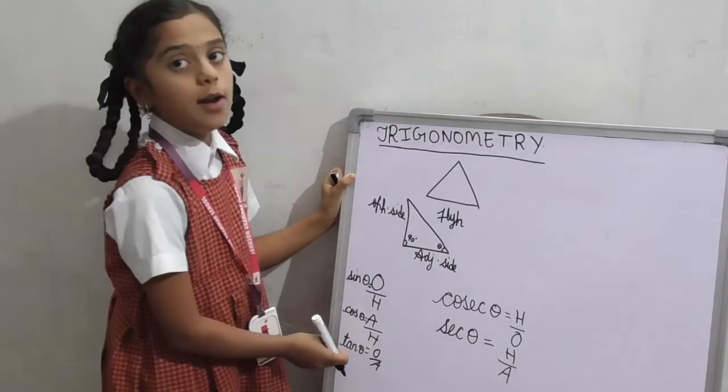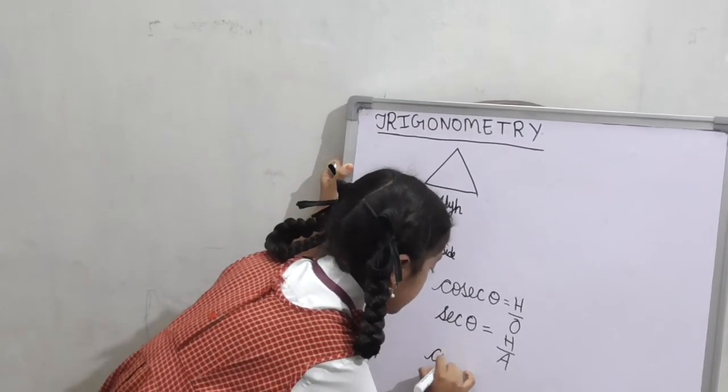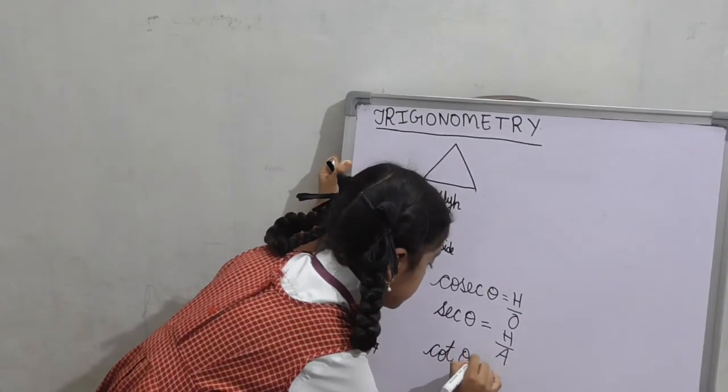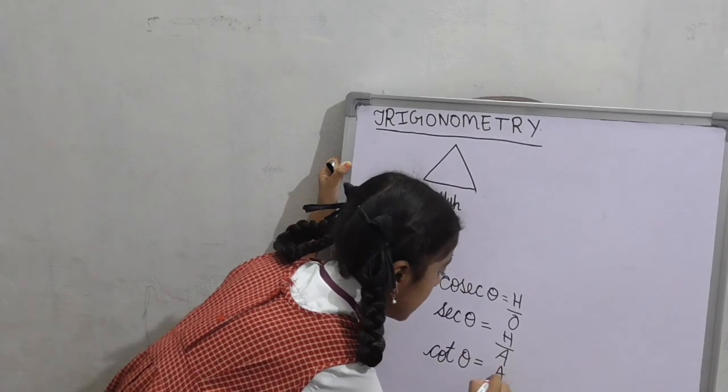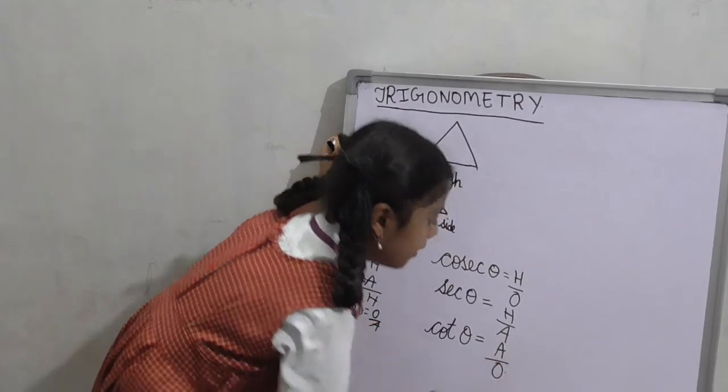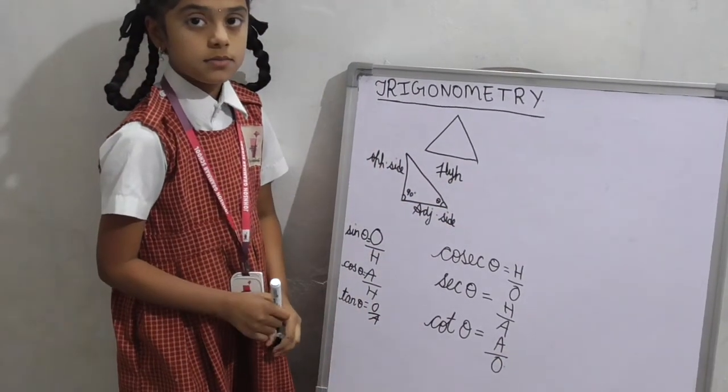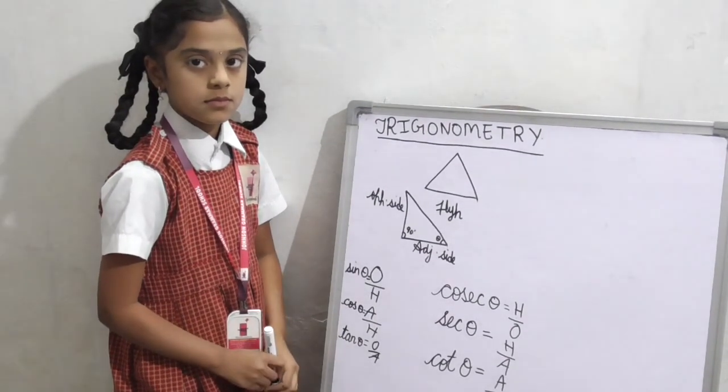Reciprocal of tan theta is cot theta. Its formula is adjacent by opposite side.